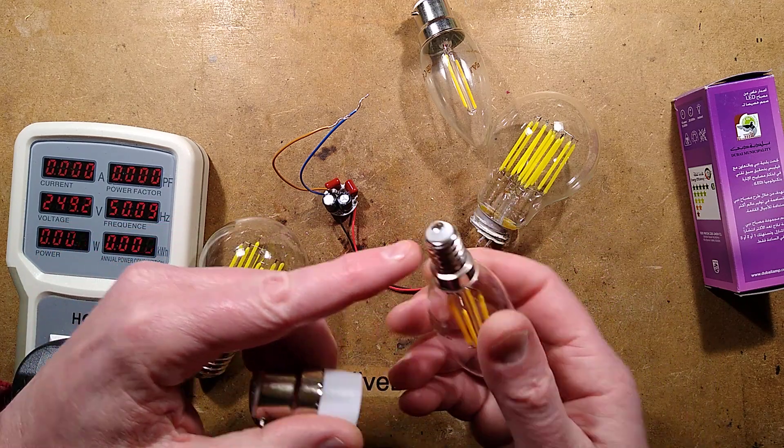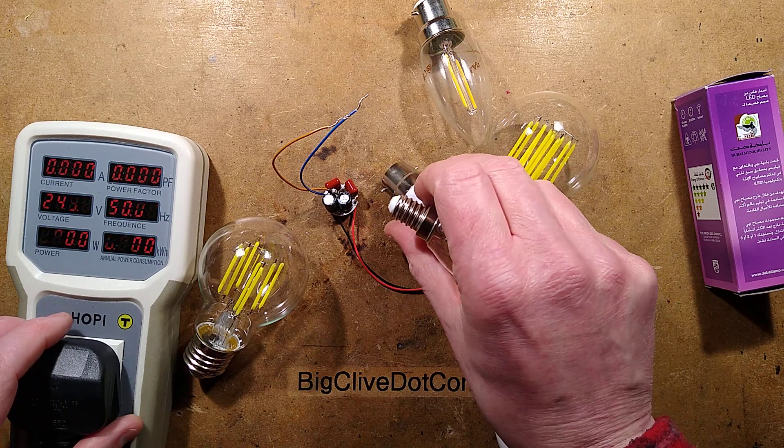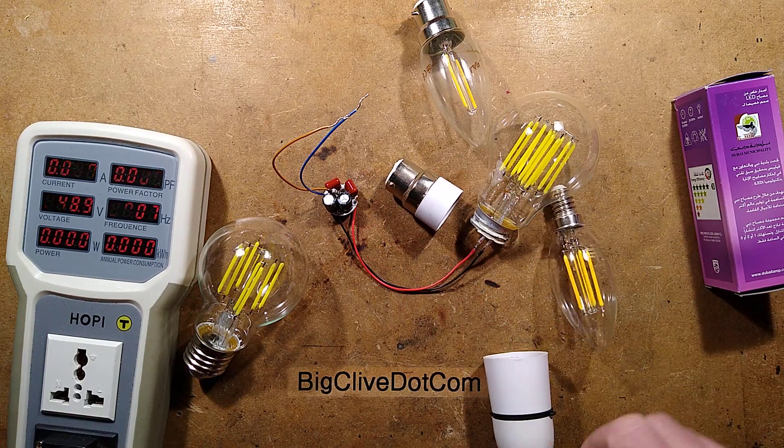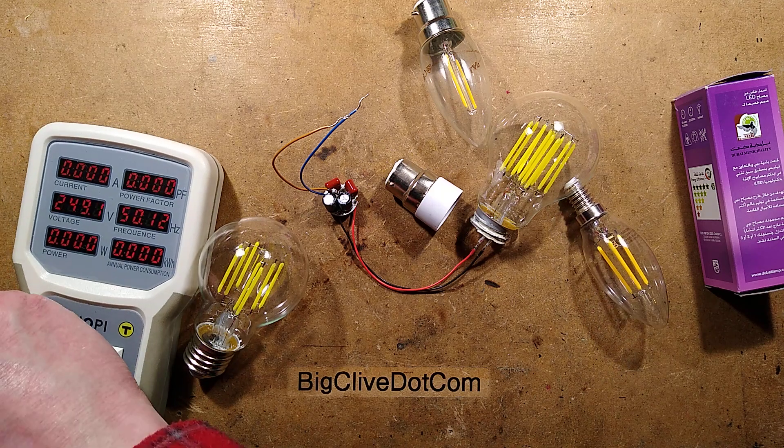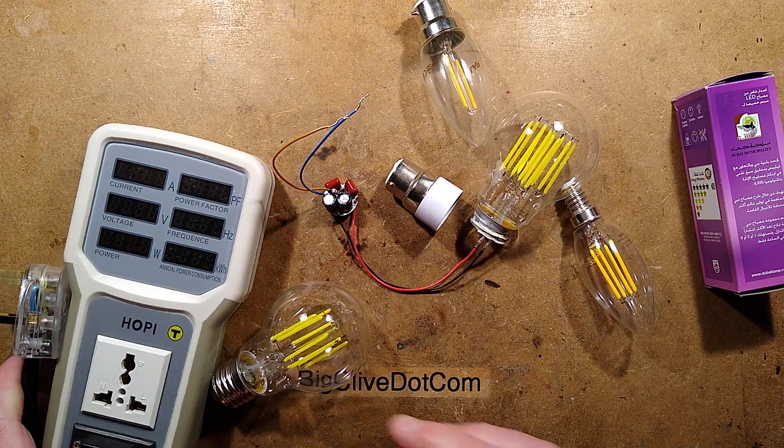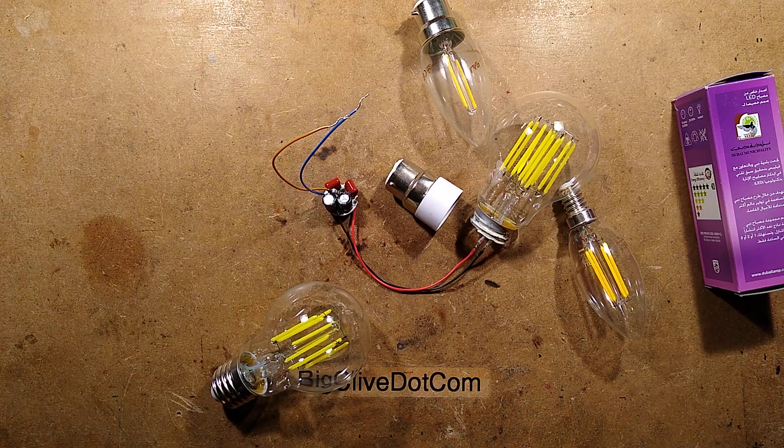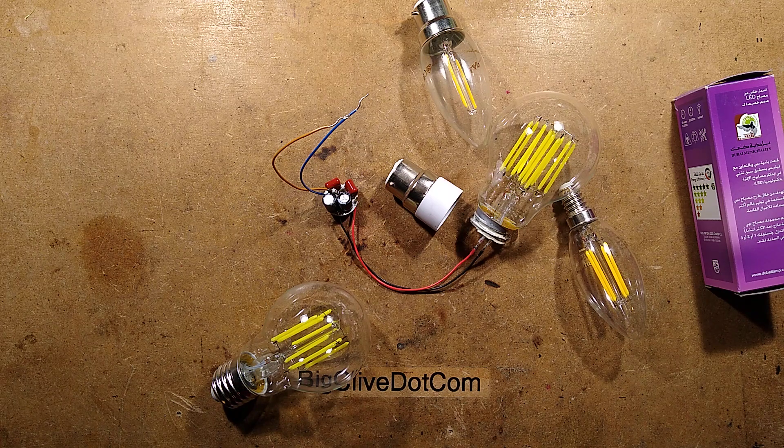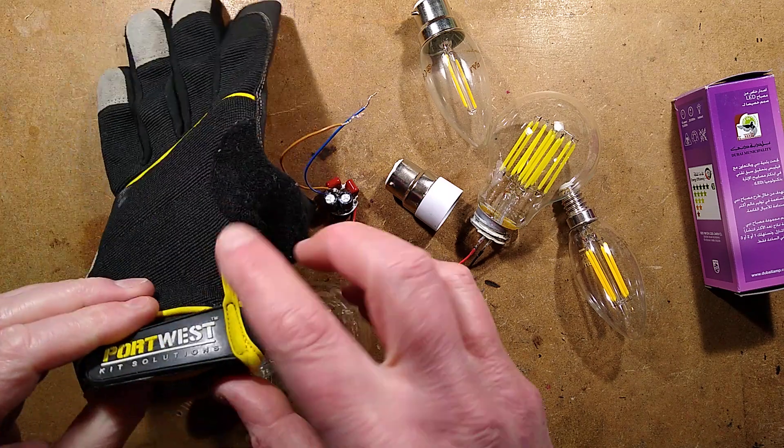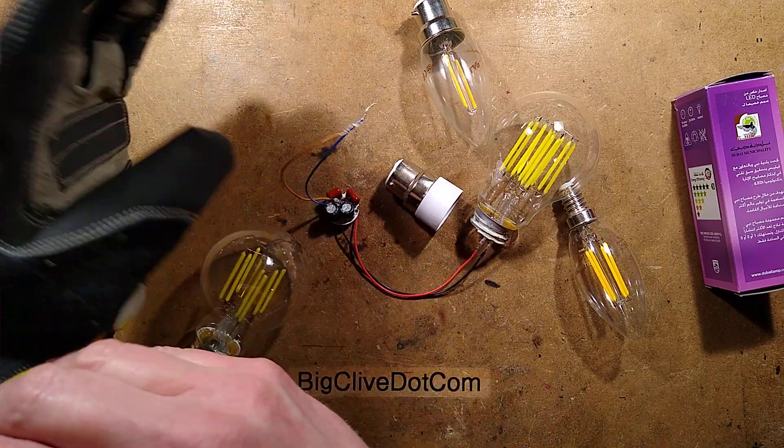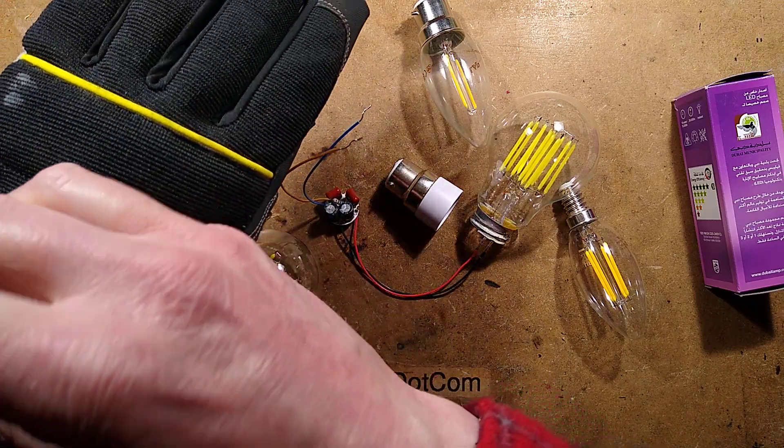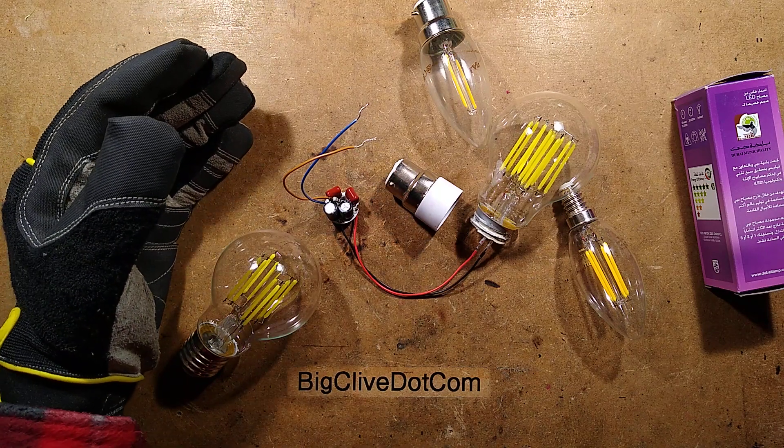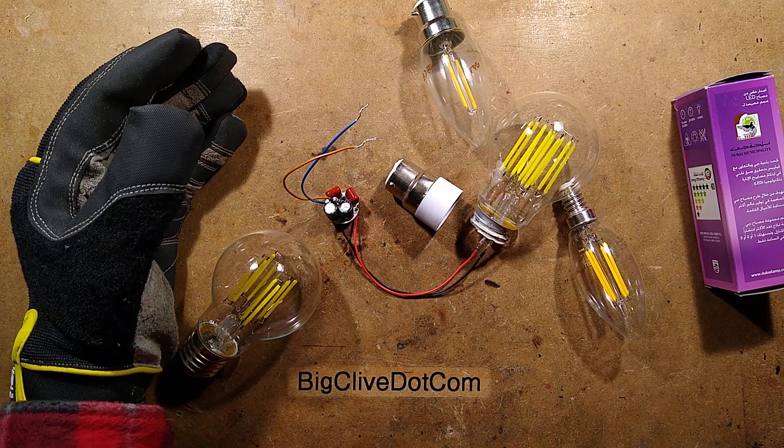That suggests they must have an electrolytic smoothing capacitor in here, but how have they fitted the rest of the current limiting circuitry? There's only one way to find out. To appease those who don't like seeing me gouging at glass lamps with my bare hands, I shall put on a glove.